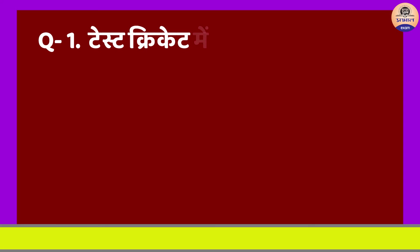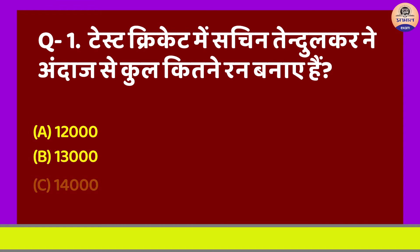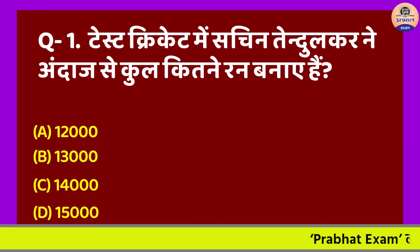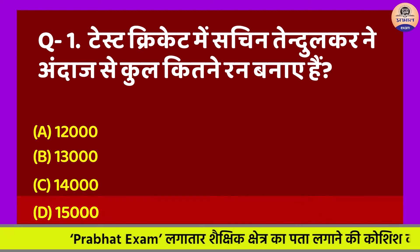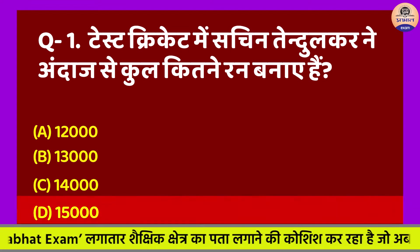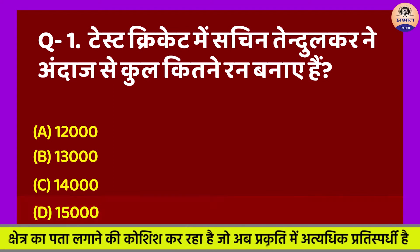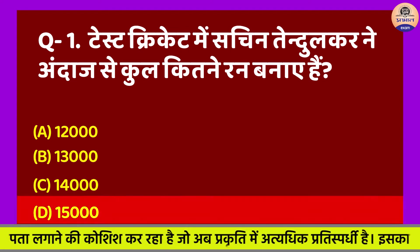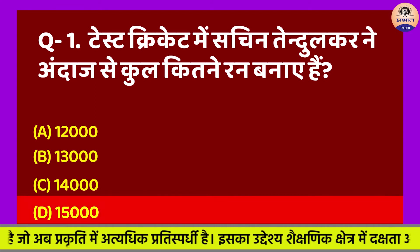Question No. 1: Test cricket mein Sachin Tendulkar ne andaaz se kul kitne run banaye hain? A. 12,000, B. 13,000, C. 14,000, D. 15,000. Sahi jawab hai Option D. Test cricket mein Sachin Tendulkar ne 15,921 run banaye hain. Ye uplabdhi Sachin ne 200 Test match khel kar hasil ki.